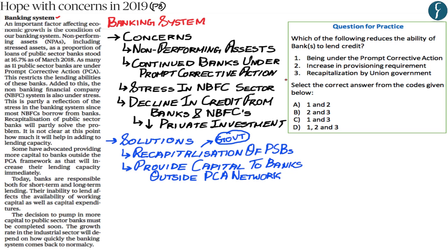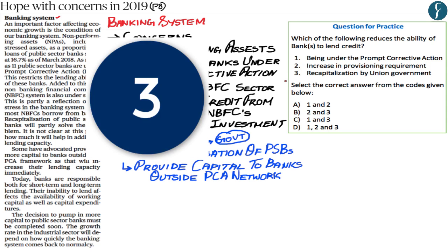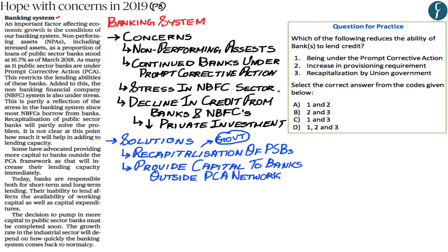A practice question: 'Which of the following reduces the ability of banks to lend credit?' The correct answer is A — 1 and 2. Banks placed under Prompt Corrective Action or those with increased provisioning requirements have reduced lending ability. However, recapitalization is a step that actually helps banks lend more money. With this, we have understood the concerns and solutions regarding the banking system.